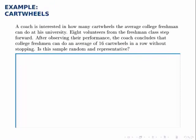This is a simple example that illustrates how a sample can be biased. A coach is interested in how many cartwheels the average college freshman can do at his university. Eight volunteers from the freshman class step forward. After observing their performance, the coach concludes college freshmen can do an average of 16 cartwheels in a row without stopping. Is this sample random and representative? A good sample is random and representative. A simple rule of thumb: think about whether every member of the population is equally likely to be selected. If so, there's randomness involved.